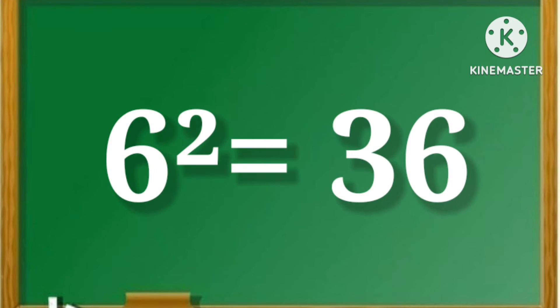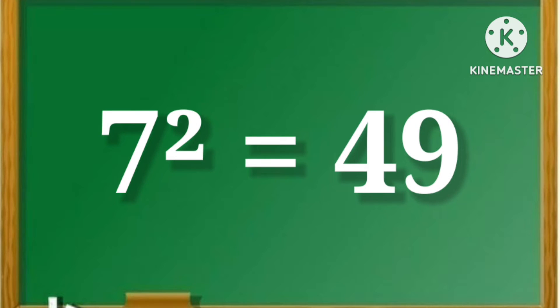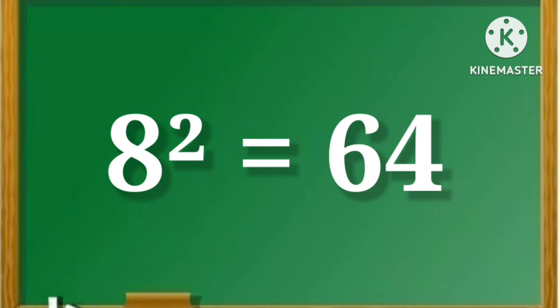6 square is equal to 36. 7 square is equal to 49. 8 square is equal to 64.